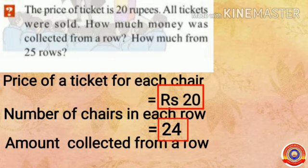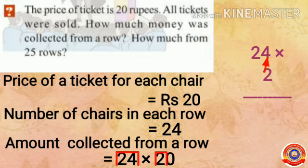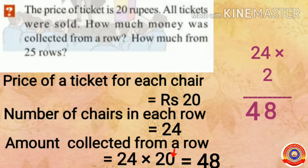Multiply 24 and 20. 24 into 20: first multiply 24 and 2. 2 into 4 is 8, 2 into 2 is 4. Then put a 0 on its right side. The answer is 480.